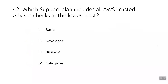Question forty-two: which support plan includes all AWS Trusted Advisor checks at the lowest cost? The answer is Business. Only the Business and Enterprise support plans include all AWS Trusted Advisor checks, but Business has the lower cost, making it the matching answer.